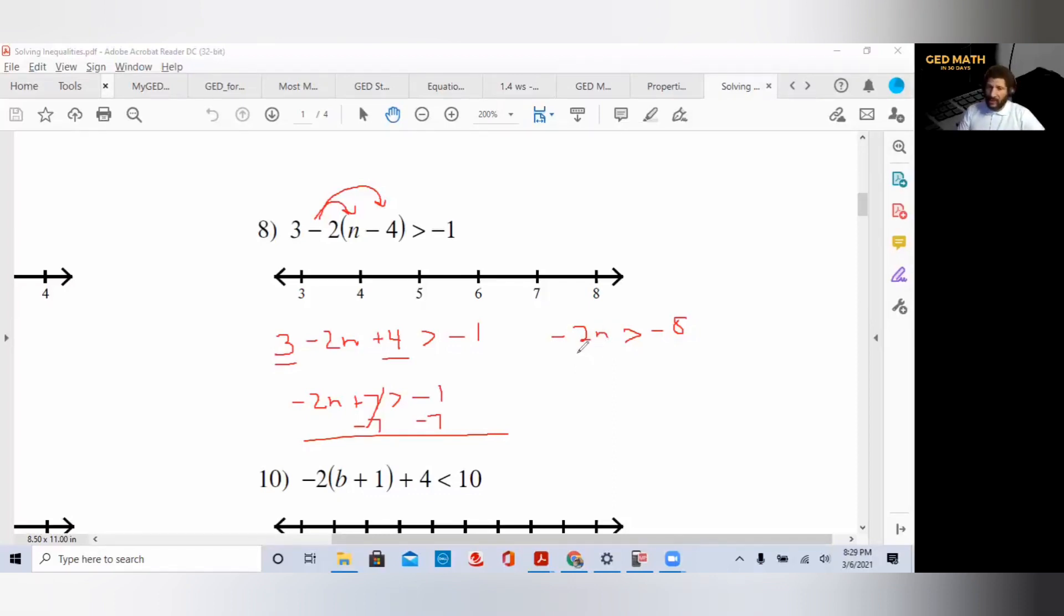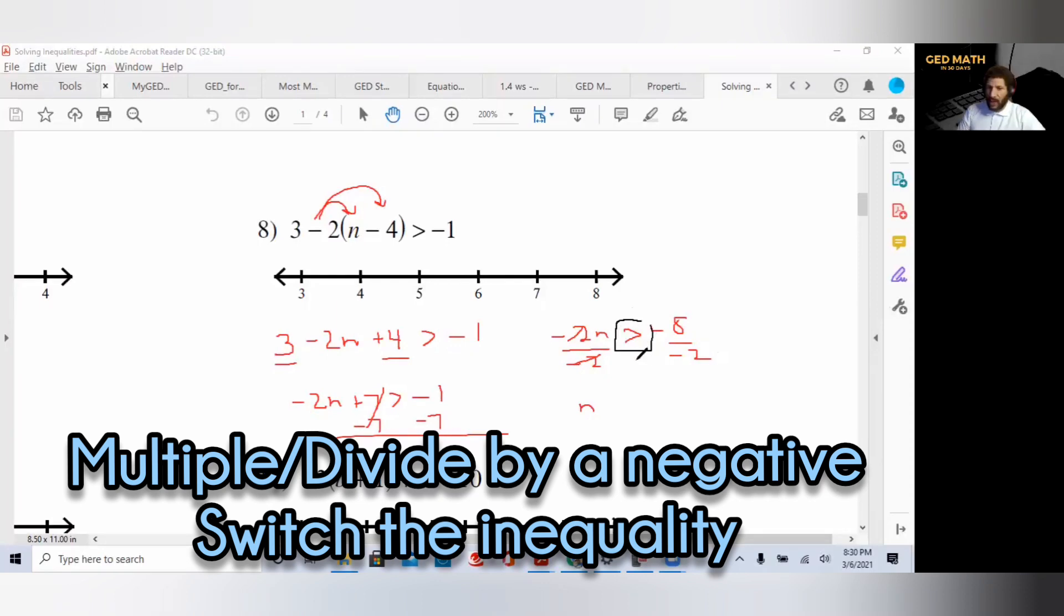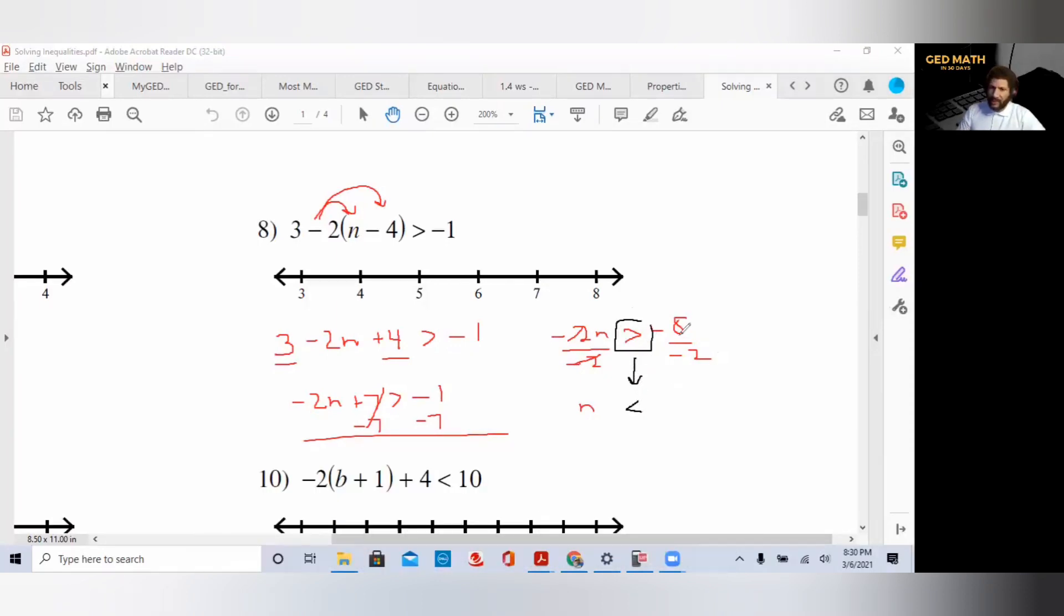We want to solve for n. Since n is being multiplied by negative 2, we'll divide by negative 2. Whatever we do on one side, we do on the other. The negative 2s cancel, you bring your n down. Because we divided by a negative number, remember our inequality must be switched. Change it to less than. Minus 8 divided by minus 2, 8 divided by 2 is 4, two negatives make a positive. So n is less than 4. We have an open circle at 4 and an arrow to the left. That is inequalities.